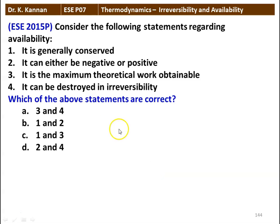The next question: consider the following statements regarding availability — it is generally conserved; it can either be negative or positive; it is the maximum theoretical work obtainable; it can be destroyed in irreversibility. Which statements are correct? Statements 3 and 4 are correct: availability is the maximum theoretical work obtainable and it can be destroyed in irreversibility.